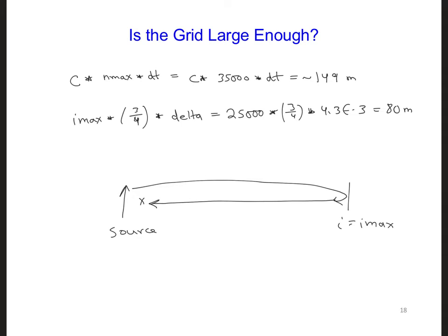And the round trip propagation distance is about 160 meters, about double that. And that is longer than the 149 meters the wave will propagate during the simulation. So in other words, we do not need to increase i max in order to run this test of the PML.